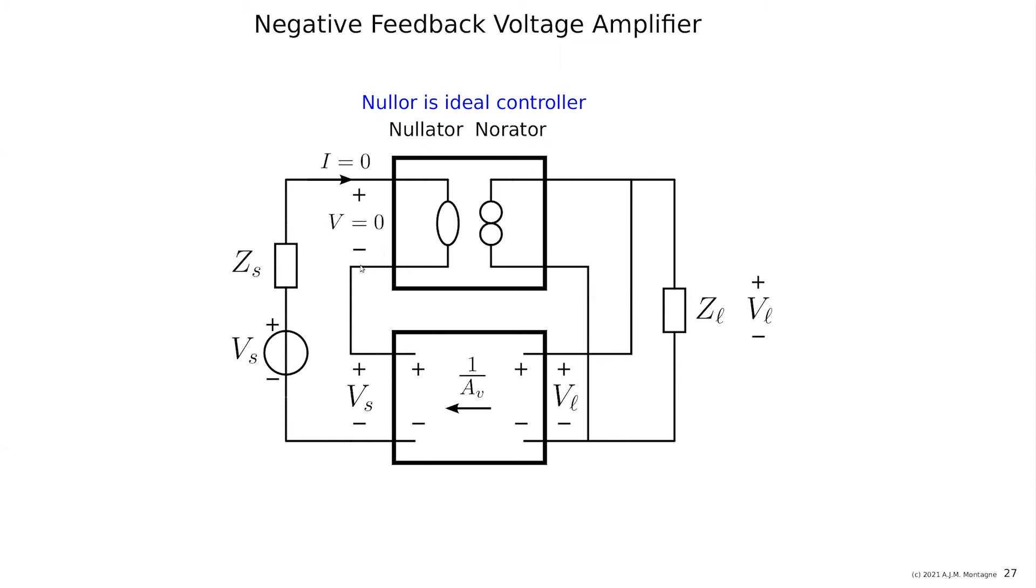So the nullator is setting a condition, it is not making a short because V equals zero or something like that. No, it is only setting a network condition. And the extra degree of freedom that we need, the extra column we need because we added the row in the matrix, the extra column we need is provided by the norator.